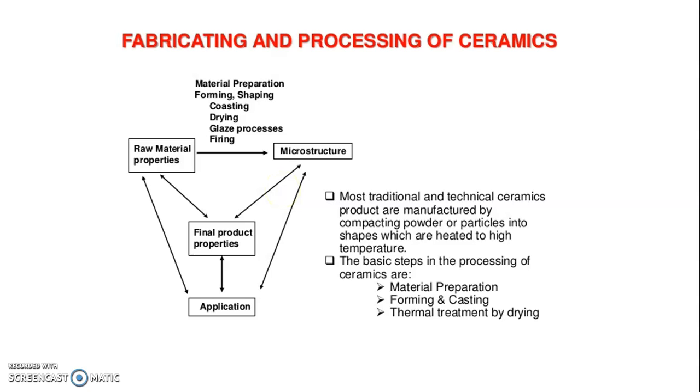The manufacturing process involves: material preparation, forming and shaping, coating, drying, the glazing process, and firing. With the help of this process, we are manufacturing ceramics as the final product.